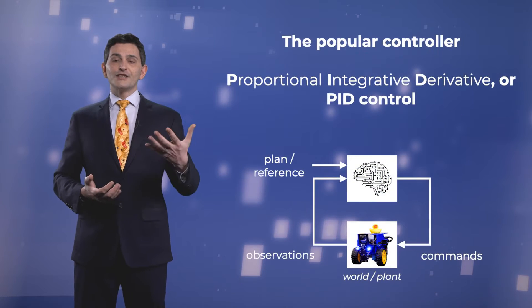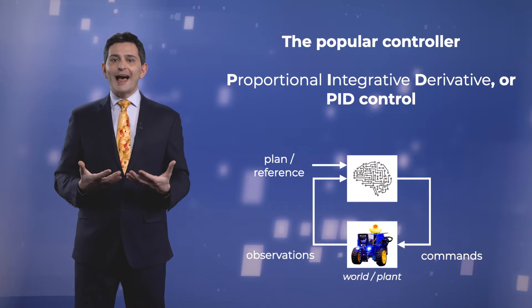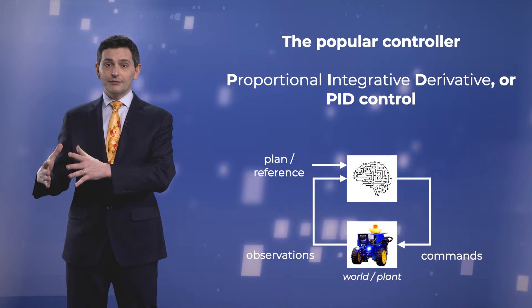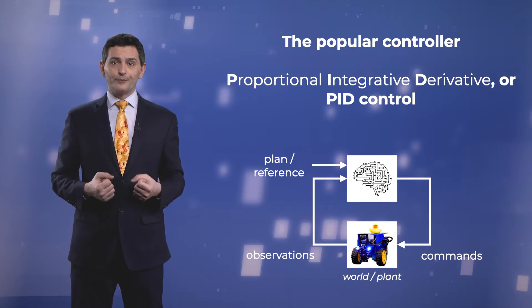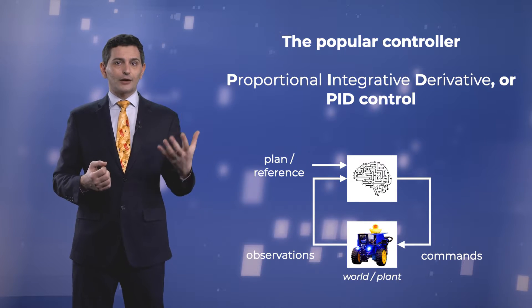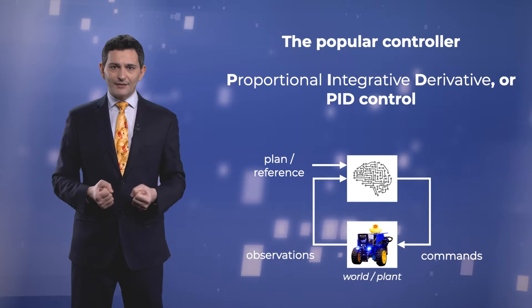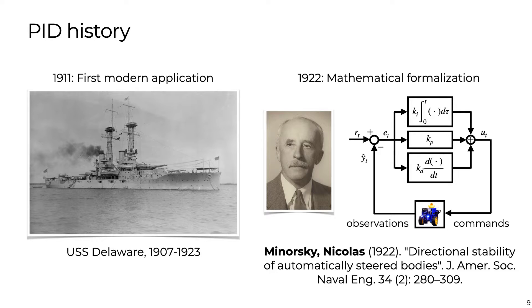The historically most popular control algorithm is the so-called proportional-integrative-derivative, or PID, control. It is a feedback control approach that can be used even when no model of the plant is available. With its first modern application in 1911 and theoretical formalization in 1922, PID control is used in the great majority of industrial control applications and is surely the first approach in controlling a system.